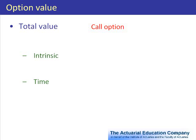If we consider a call option, we can define the intrinsic value as the value the option would have if we could exercise it now. So for a call option we could pay k and receive an asset worth s_t if it were in our interest to do so. The intrinsic value is therefore the maximum of s minus k and zero.